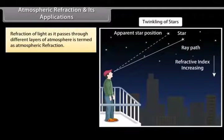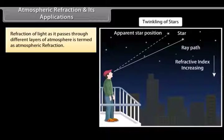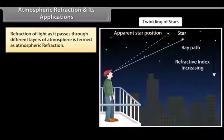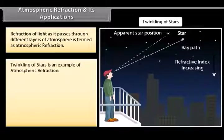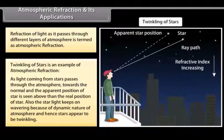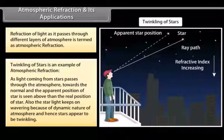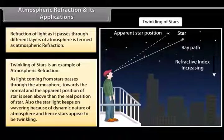Atmospheric refraction and its applications: Our atmosphere is not uniformly dense. Depending on local conditions it may have hot and cool air near the ground. Hot air is lighter than cooler air and has a lesser refractive index. Due to this, starlight or sunlight entering the atmosphere undergoes refraction, known as atmospheric refraction. As light from stars passes through the atmosphere it bends towards the normal, and the apparent position of the star is seen above its real position. Starlight keeps wavering due to the dynamic nature of the atmosphere, making stars appear to twinkle.